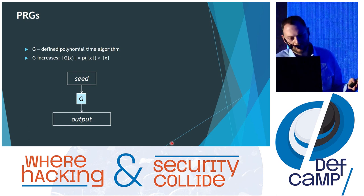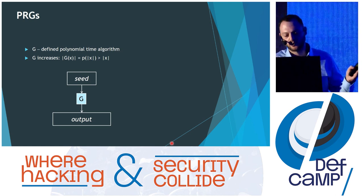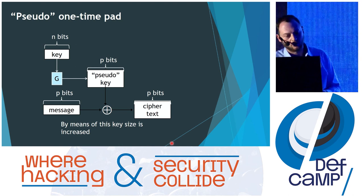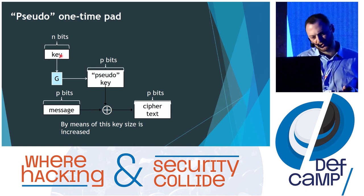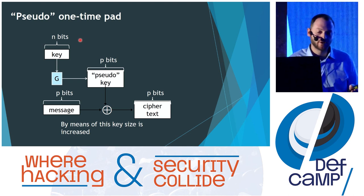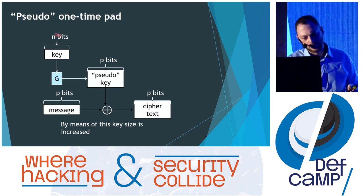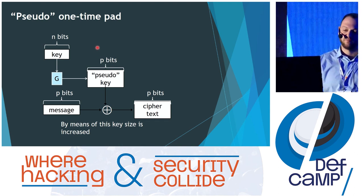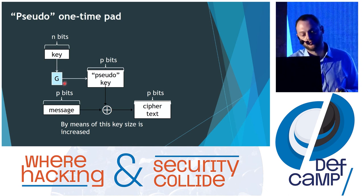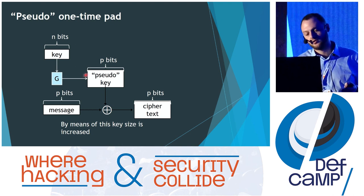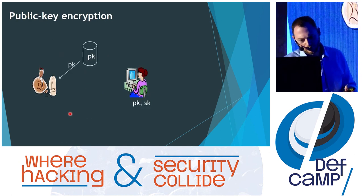As we said, the key must be really big. For this we have pseudo-random number generators — how they work is they take a small seed and enlarge it into a big output. This PRNG can be used in one-time pad. In this case we will not have perfect secrecy anymore, but we will still have security — computational security. The key is n bits, the message is p bits where p is much larger than n. We apply the PRNG to the n-bit seed and afterwards XOR the message with the PRNG output to get the p-bit ciphertext.